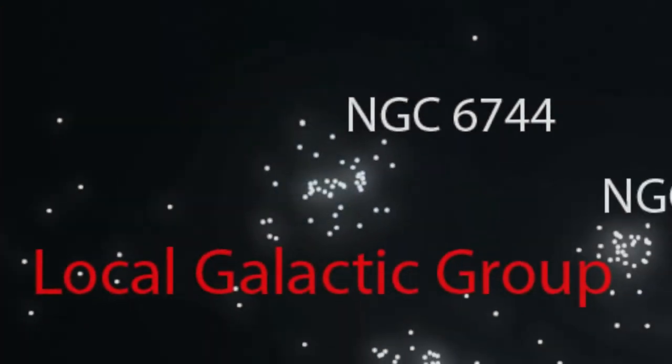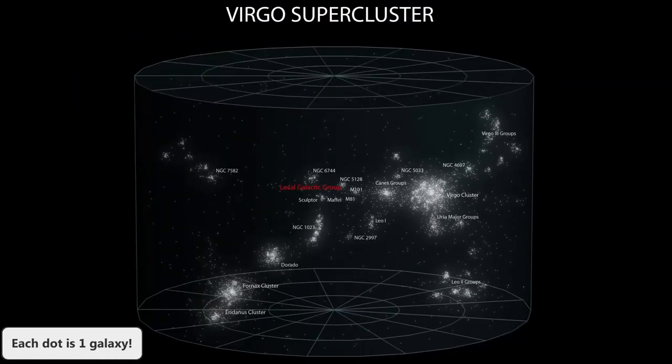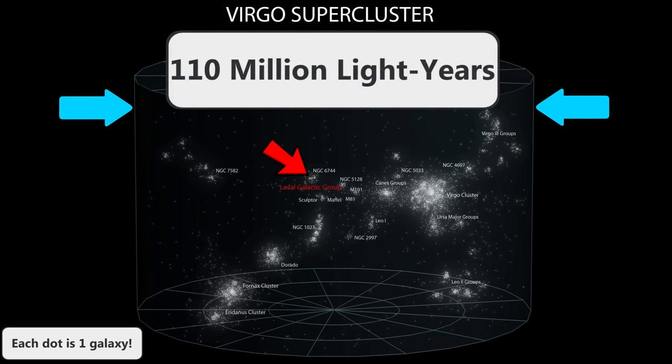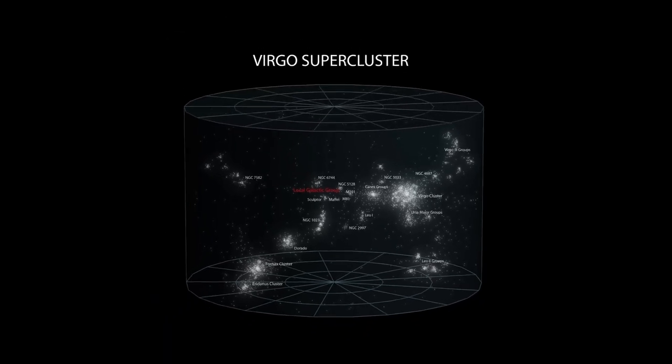But zooming out even further and we can see the Virgo supercluster, of which the local group here is just a tiny segment of. There are at least 100 other groups of galaxies just like our own local group inside of here, and the distance from one side to the other is a mind-numbing 110 million light years.